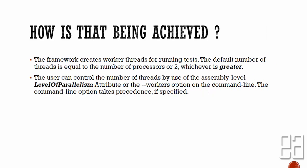The framework creates worker threads for running tests. The default number of threads equals the number of processors or two, whichever is greater. So if you have a processor with two or three cores, those cores are used by NUnit. The user can control the number of threads using the assembly-level LevelOfParallelism attribute or worker options on the command line. Command line options take precedence if specified.